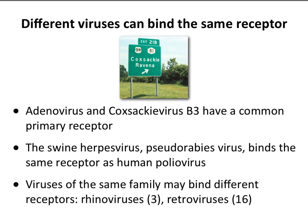A swine herpes virus called pseudorabies virus happens to bind the same receptor as poliovirus — two totally different viruses. Herpes viruses are enveloped; poliovirus is not. Yet they bind the same receptor. And viruses of the same family may bind different receptors: rhinoviruses have at least three different receptors, and retroviruses have at least 16 different receptors. Remarkable diversity — there are lots of variations in virus-receptor interactions.